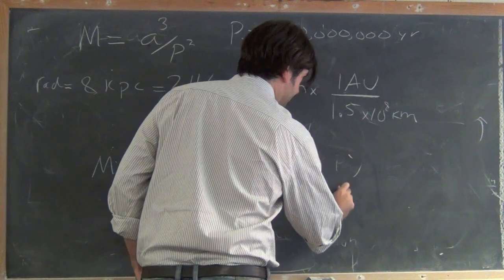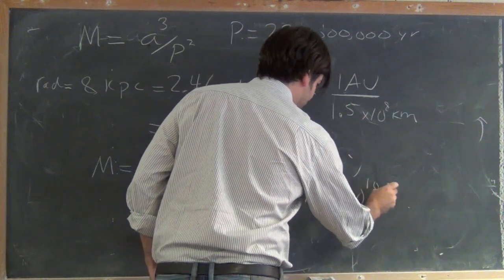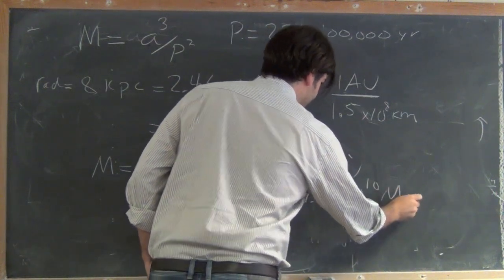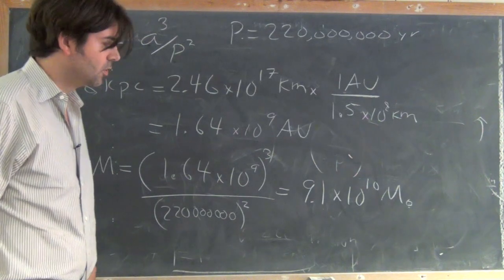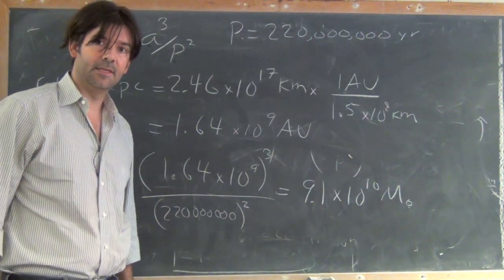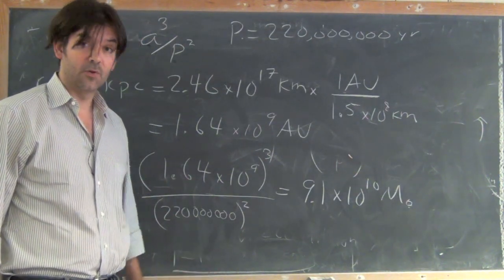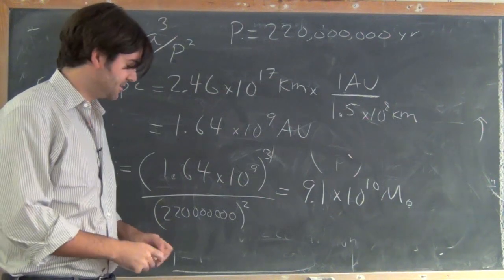9.1 times 10 to the 10th solar masses, or about 90 billion solar masses. That's a lot of stuff inside the galaxy.